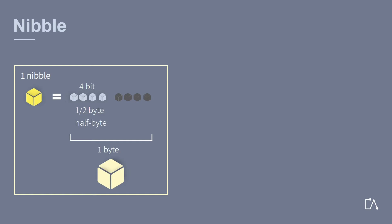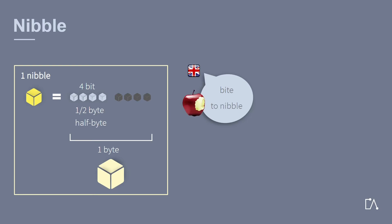The reference to the storage unit byte is also found in the language. This is because the term is based on the English word byte. The term nibble goes back to the English word to nibble, so we can say that a nibble is something like a small byte. Rarer spellings for nibble are also with y, or with only one b.